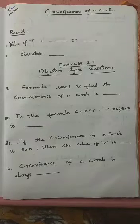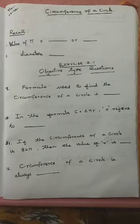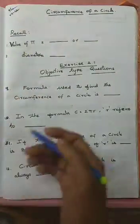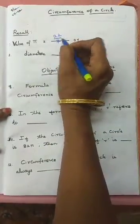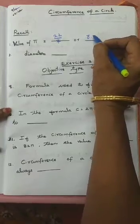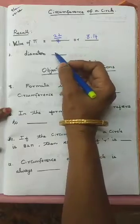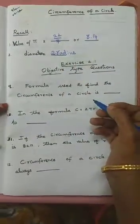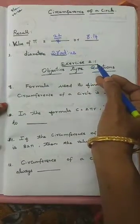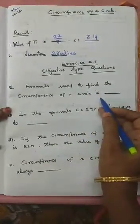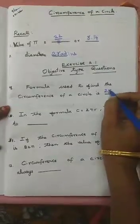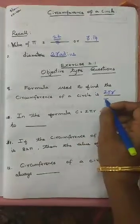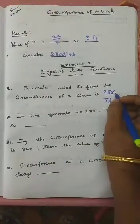Good morning students, welcome to our math class. Today we are going to see circumference of a circle word problems. Let's recall: the value of pi in fraction is 22/7, in decimal is 3.14. Diameter is equal to 2 times radius, that is 2r. We shall see objective type questions in Exercise 2.1. The formula used to find the circumference of a circle is 2πr when radius is given, and πd when diameter is given. Don't forget to write the units.